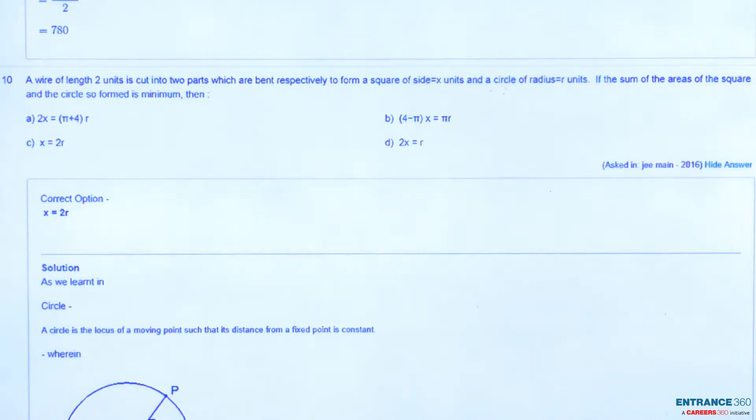A wire of length two units is cut into two parts which are bent respectively to form a square of side equal to x unit and another circle of radius r equal to r units. If the sum of area of the square and the circle so formed is minimum, then what would be the condition between x and r?